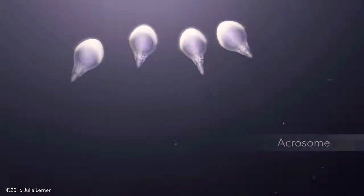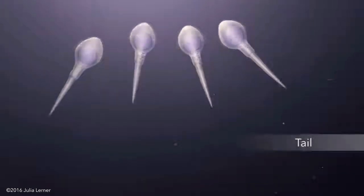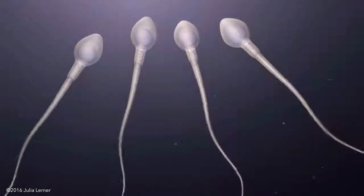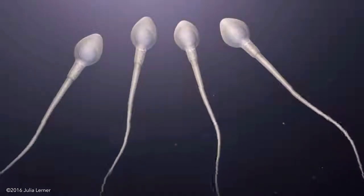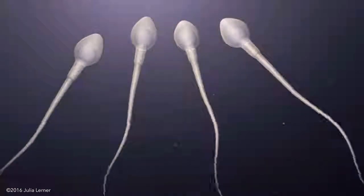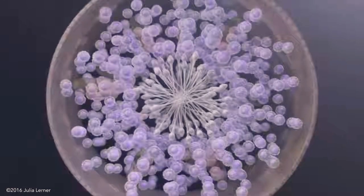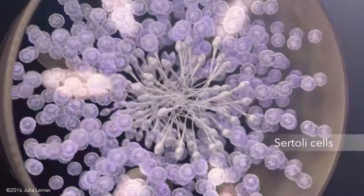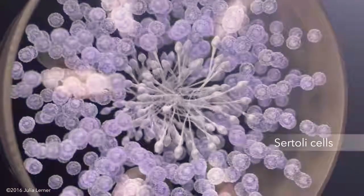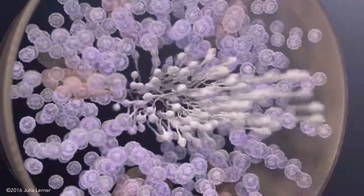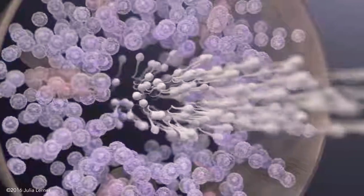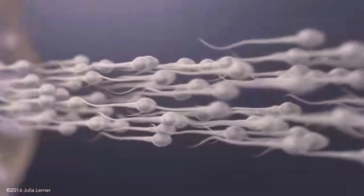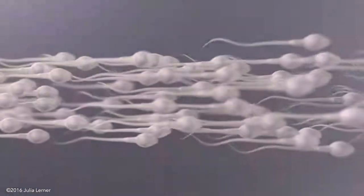Much of the cytoplasm is shed as spermiogenesis completes. The sperm cells break free from the Sertoli cell lining of the tubules into the lumina. The sperm cells are then stored in the epididymis, where they functionally mature.